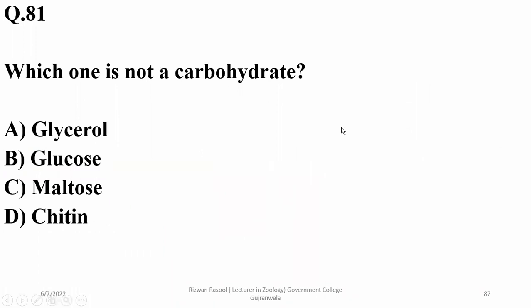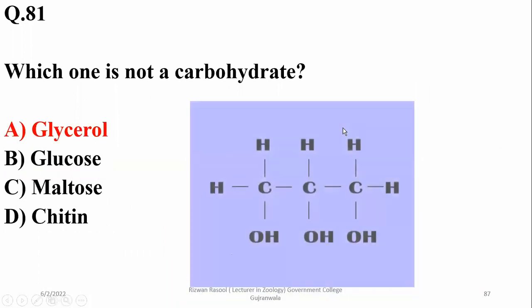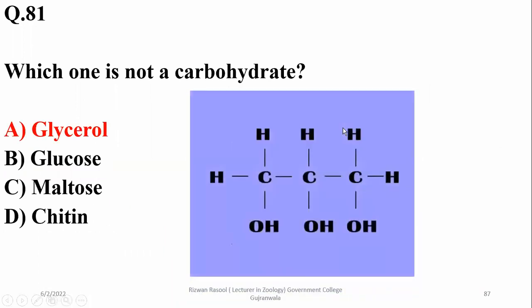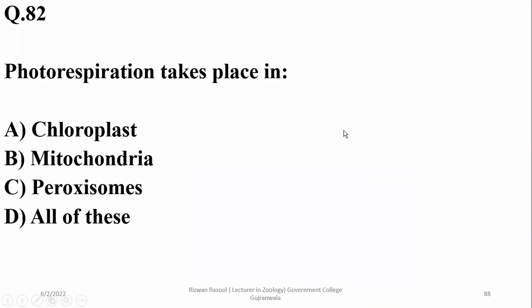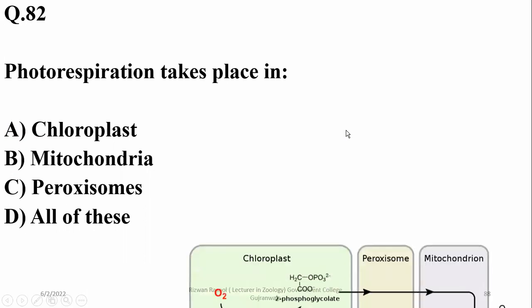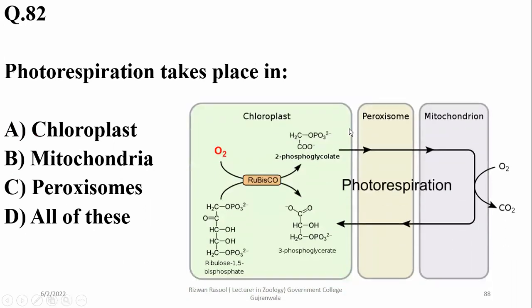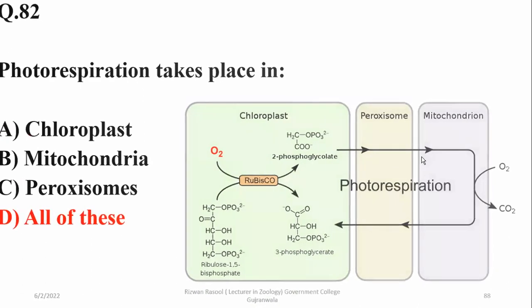Number 81. Which one is not a carbohydrate? Glycerol is a trihydroxy alcohol, while glucose, maltose, and chitin are forms of carbohydrate. Number 82. Photorespiration takes place in all of these organelles: first in the chloroplast, then in peroxisomes, and the last stage occurs within the mitochondria. So delta is the right option.